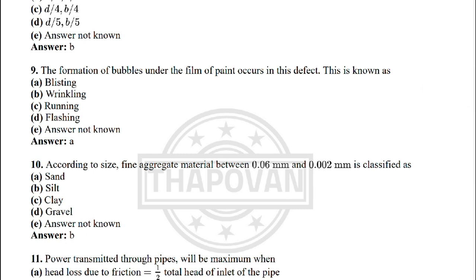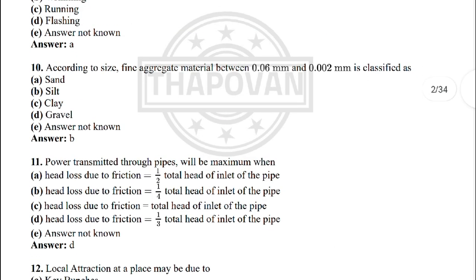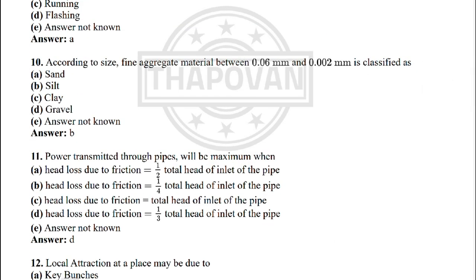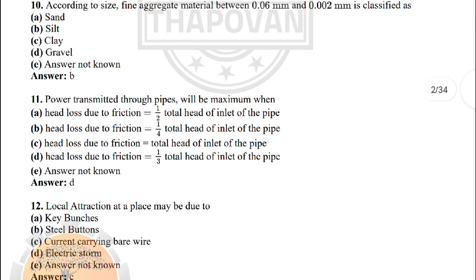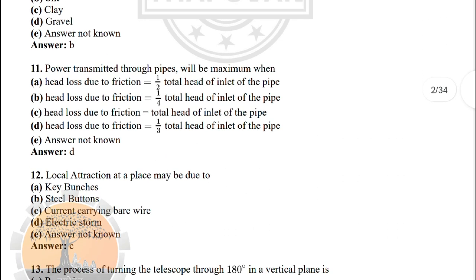Next question: according to size, fine aggregate material between 0.06 mm and 0.002 mm is classified as — the correct answer is option B: silt.